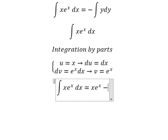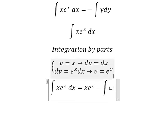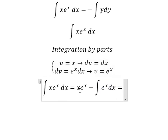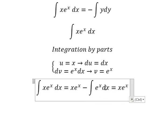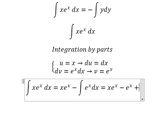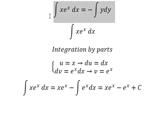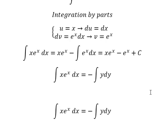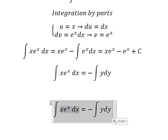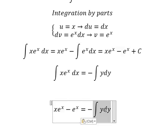That gives us the integration of e to the power of s ds, which equals e to the power of s. Then we add the constant c. Now returning to the other side: the integration of y gives y squared over 2.